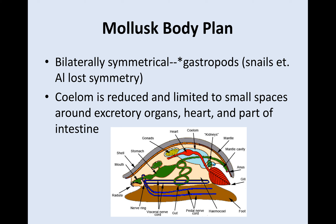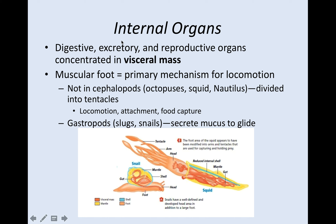The coelom is reduced, limited to small places throughout the organism, especially the excretory organs, the heart, and part of the intestine. The internal organs to focus on are in the visceral mass — you'll find your digestive, excretory, and reproductive organs there. They also have a muscular foot, which is their primary means for locomotion. In cephalopods, the foot has been divided into tentacles or arms. Squid actually have two tentacles and the rest are arms. The muscular foot is used for locomotion as well as attachment or food capture.